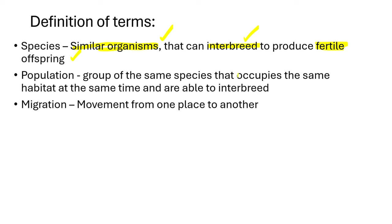A population is a group of the same species that occupies the same habitat at the same time and can also interbreed. For us to have something known as a population, we must have the same species occupying the same habitat. When we talk about a habitat, we are talking about a place to live within the ecosystem.